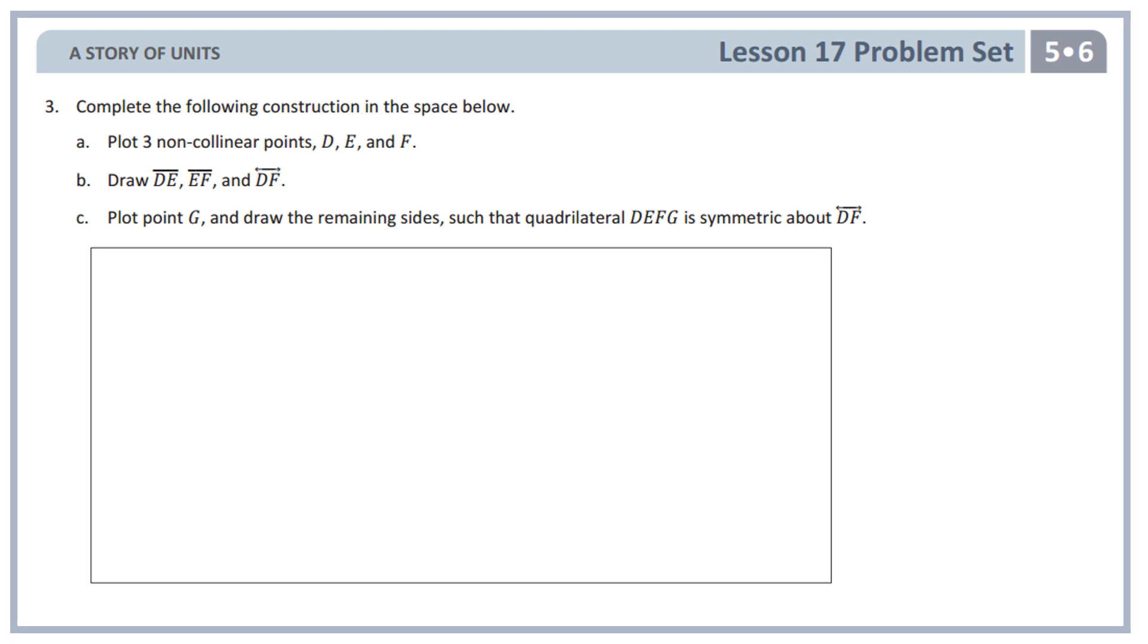Number three says, complete the following construction in the space below. A, plot three non-collinear points D, E, and F. The word non-collinear means not on the same line, right? Non means not, collinear means same line. So anywhere in this space, I need to draw three points D, E, and F, and it can't be in the same horizontal line, same vertical line, or the same diagonal line. Sort of randomly spaced out. So here's my first point, point D. Here's my second point, point E. And here's my third point, point F. So I have made those points connected to each other, and then I went ahead and connected DF as well.